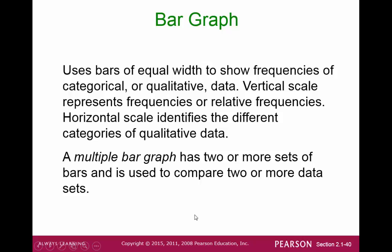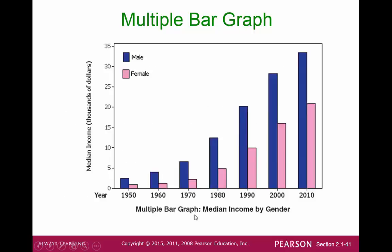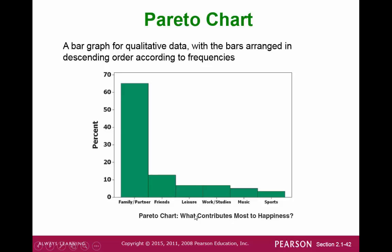A bar graph shows a frequency of something that may not be quantitative. If we have categories, we can put them in bar graphs. A multiple bar graph could have a set of two or more bars when comparing data sets — for example, comparing the median income of men and women in each of these decades. A Pareto chart is a bar graph that is sorted according to the highest frequency.